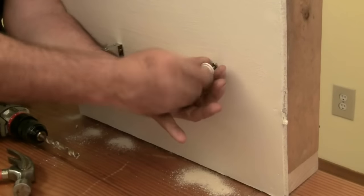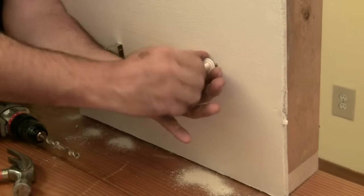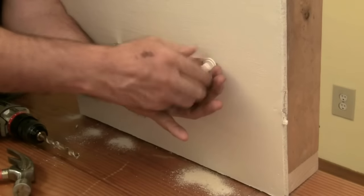As you screw in the bolt, keep enough counter pressure on that bolt to prevent the toggle from spinning. The toggle needs to fit snugly and remain stationary against the interior side of the wall.